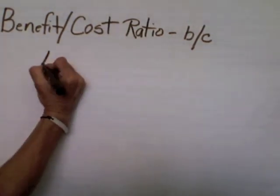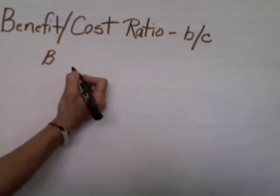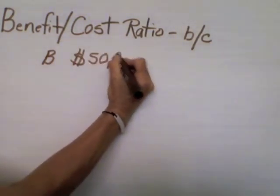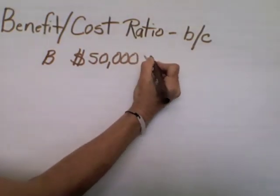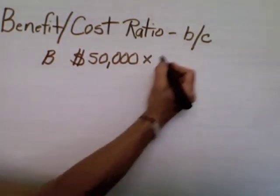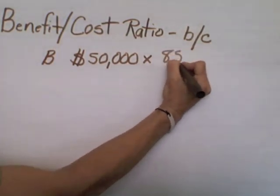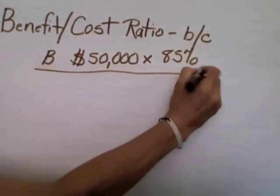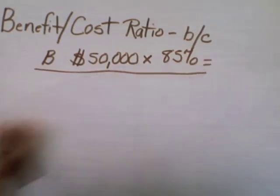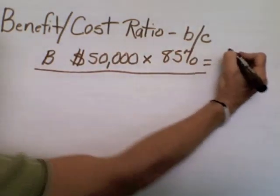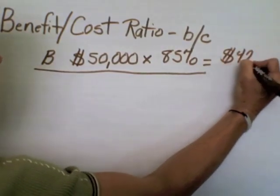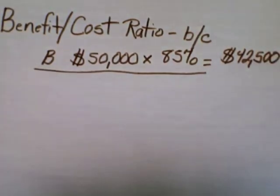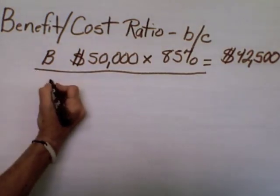When we actually run the ratio, it looks like this. We assume that we have made the decision to work on a project that we project will generate $50,000 worth of revenue. And we're going to say that our assurance that we can hit that projected amount, or the probability, is 85%. We run the top portion of this equation by multiplying $50,000 by 0.85, and the expected revenue is $42,500.